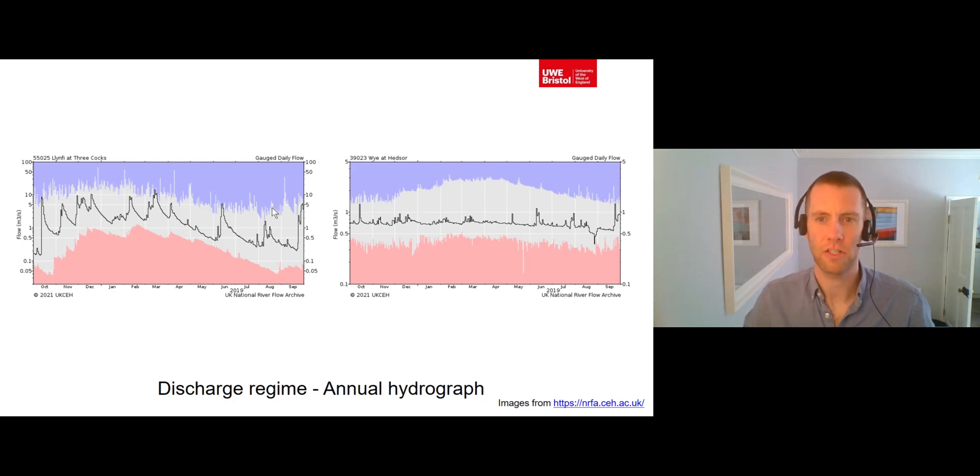These graphs from the National River Flow Archive show the annual hydrographs for both the River Linphy in Wales and the River Wye in Buckinghamshire. You can see that the Linphy has a very variable or flashy discharge regime. There is a big difference between its high flows, known as its storm flows, and its low flows, known as its base flows. In contrast, the Wye has a far more consistent or unflashy discharge regime. There is much less difference between its storm flows and its base flows. We will explore the physical and human factors that cause these differences in discharge regimes in lectures 4 and 5.